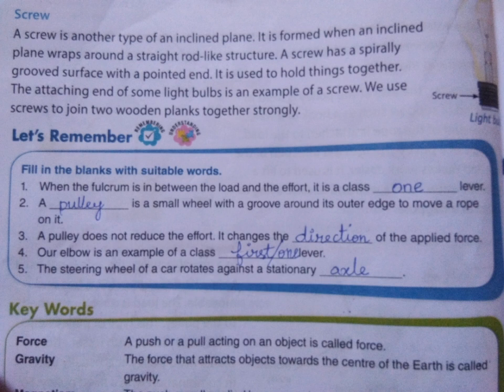Third one: A pulley does not reduce the effort. It changes the direction of the applied force. Fourth one: Our elbow is an example of a class 1 lever. The steering wheel of a car rotates against a stationary axle.